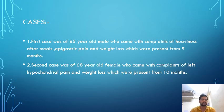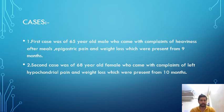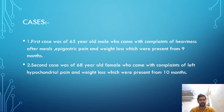Case one was a 65-year-old male who came with complaints of heaviness after meals, epigastric pain, and weight loss present for nine months. Case two was a 68-year-old female who complained of left hypochondrial pain and weight loss present for ten months.